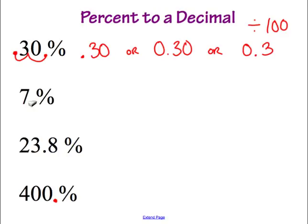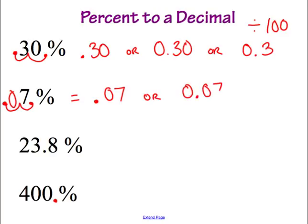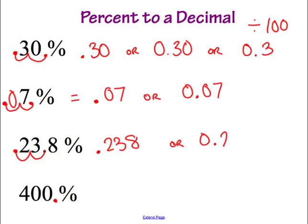Moving to 7%, we move our decimal over two places: 1, 2. We're left with an empty hole, so we fill it with a 0, and our decimal sits over here — giving us 0.07. For 23.8%, our decimal is already placed for us; we just move it two spots to the left. Our answer is 0.238.